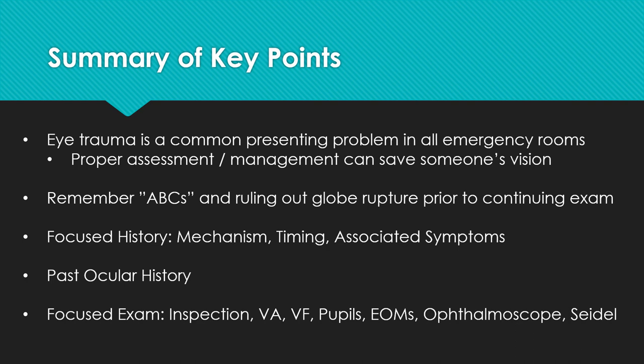Now that we've discussed all the main elements in the assessment of a patient with eye trauma, I'd like to summarize the key points. First, eye trauma is a common problem seen in all primary care clinics and emergency rooms, and proper assessment and management can save a patient's vision. Remember that ABCs and ruling out globe rupture are important before performing any further history or physical exam. In the focused history, determine the mechanism, the timing, and any associated visual symptoms. Make sure to obtain a full past ocular history. Finally, perform the focused exam including inspection, visual acuity, visual fields, pupillary function, extraocular movements, fundoscopy with the ophthalmoscope, and Seidel testing.